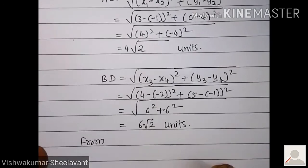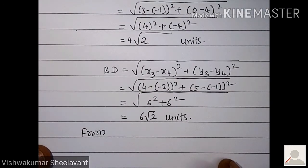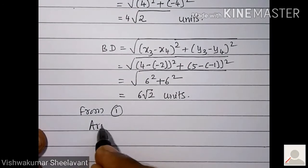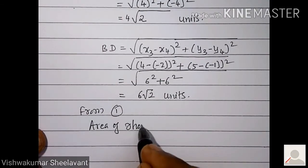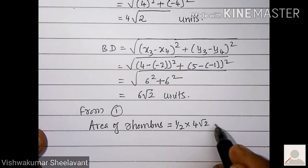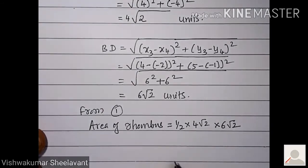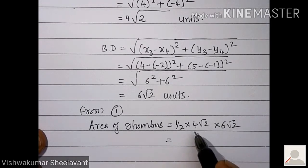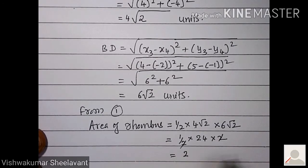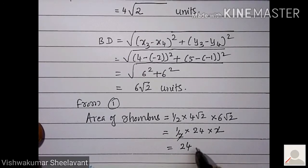Now using AC and BD in equation 1, area of rhombus is equal to half into 4√2 into 6√2. Root 2 into root 2 is 2. So you get half into 24 into 2. The 2 and 2 cancel, giving area of rhombus equal to 24 square units.